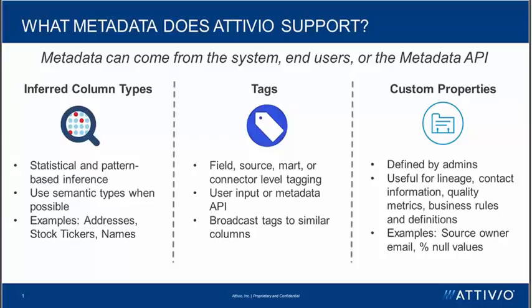Users can also apply tags at several different levels. Tags can be applied at the most granular level — the field level — and then moving up from there, tags can be applied to data sources, to marts, and also to connectors. These tags can come from user input as easily as clicking on the thing you want to tag and typing in the term for the tag, but they can also come from the metadata API as well.